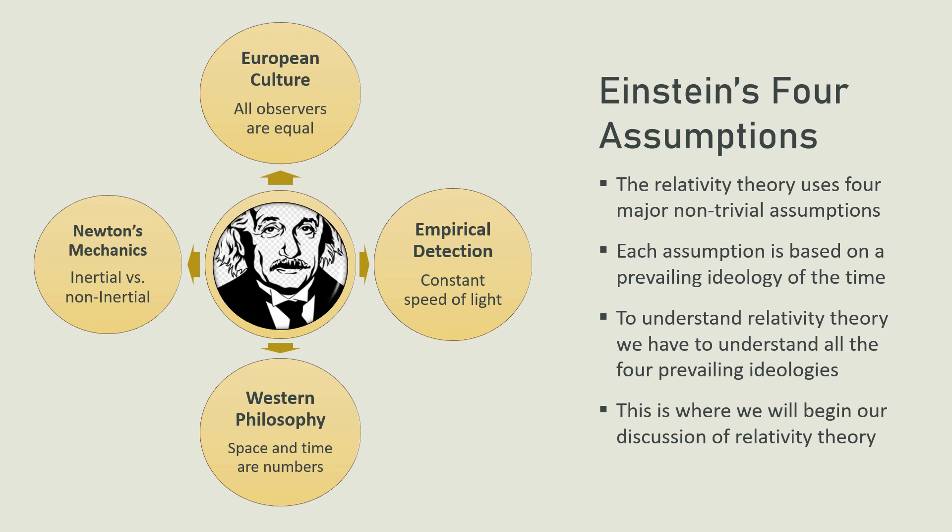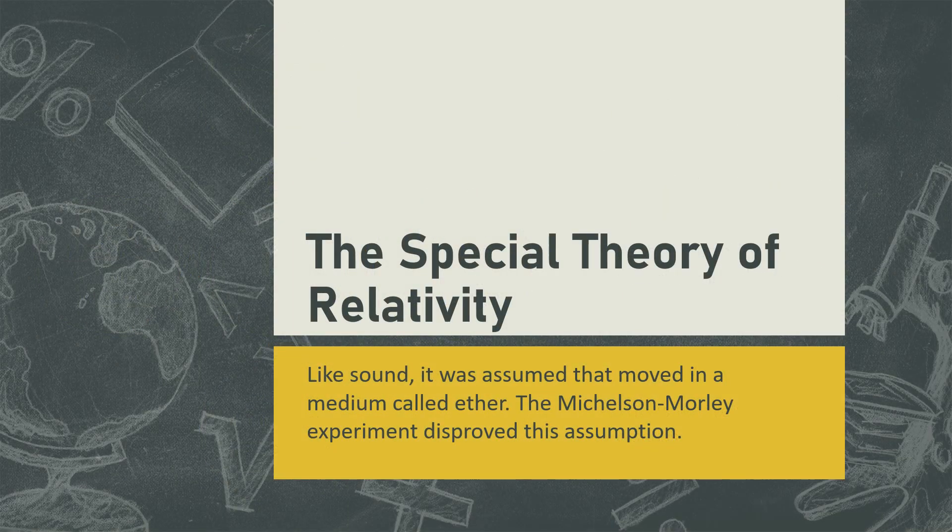We will split the discussion of the origins and concepts of relativity theory from the discussion of the alternative, covering the origins and concepts in this video by examining its four major assumptions. Let us begin with the special theory of relativity, since it came before the general theory. The brief background is that light came to be seen as an electromagnetic wave and was therefore treated similarly to sound waves.